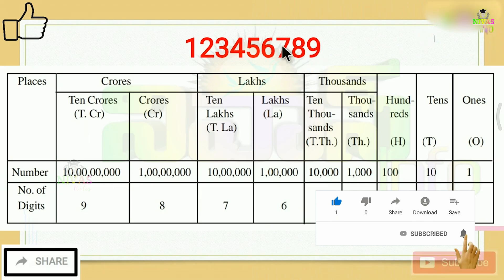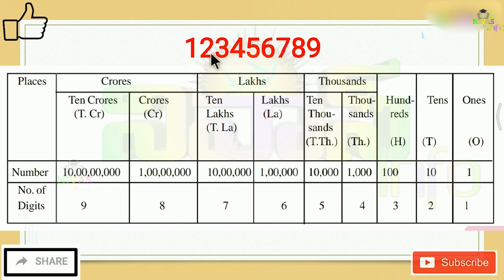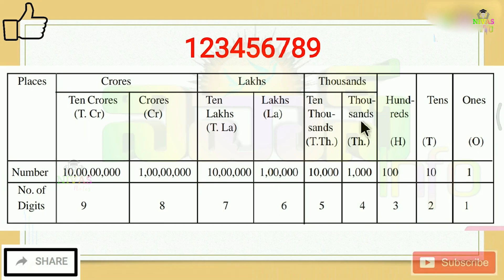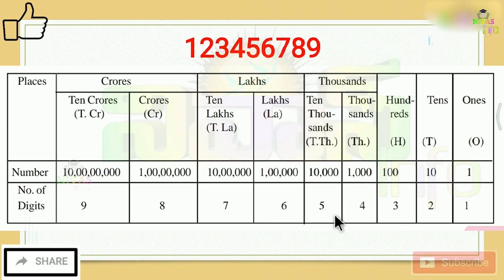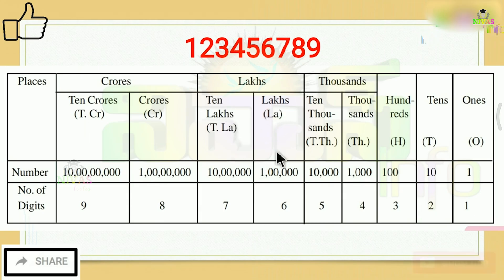For example: ones, tens, hundreds, thousands. You will count upward through the place values. Next, you divide by lakhs. There are 10 lakhs and lakhs — the lakhs group has two digits.